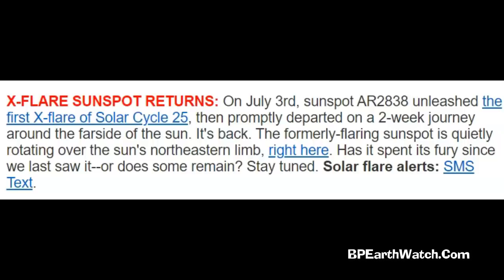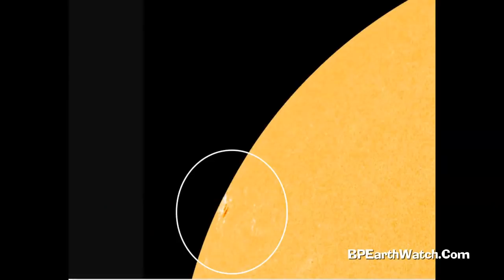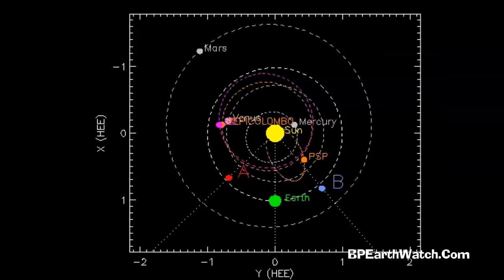Remember the video from about two weeks ago, and it was the first x-flare of this solar cycle 25? Well, it's made that 14-day journey around behind the sun, and this is what we just saw on the magnetogram. Again, this one gave us the first x-flare of this solar cycle 25.